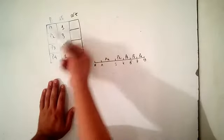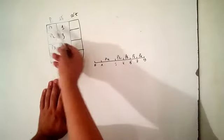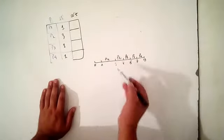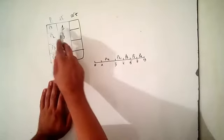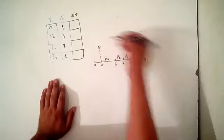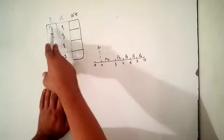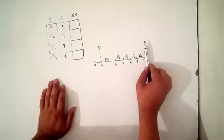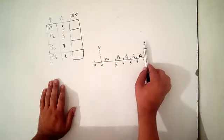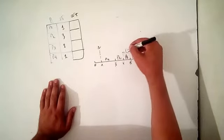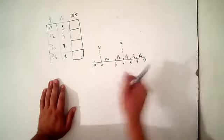For P1, we look at the arrival time, which is 1 — so P1 arrives at time unit 1. Then we find the last time that P1 executed. We always start from the right-hand side of the schedule and search for the last occurrence of P1. The last time P1 executes is at time unit 4.